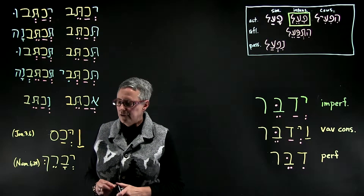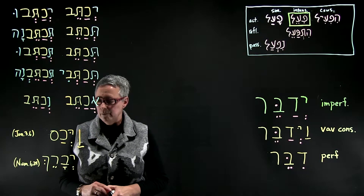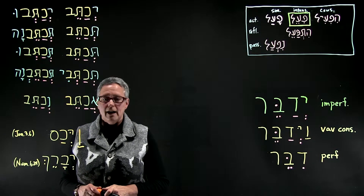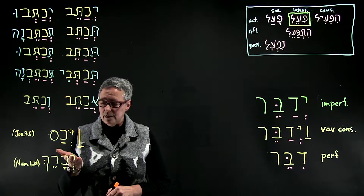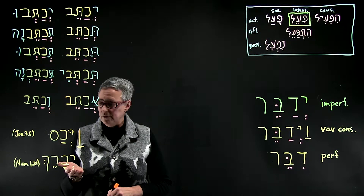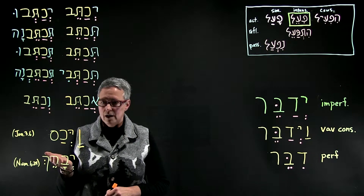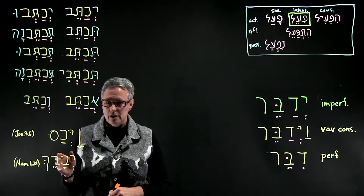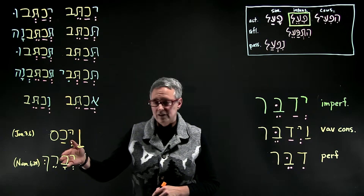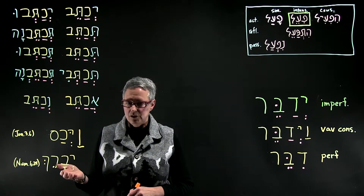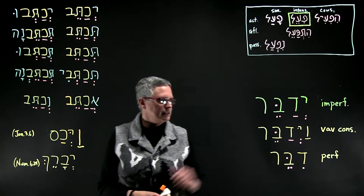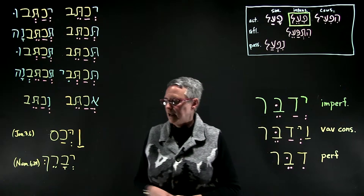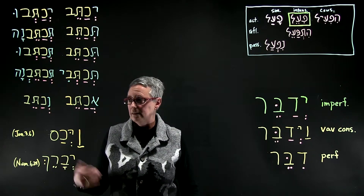Another familiar one is from Numbers: yivarech. And again, you see the shva under the prefix. Here, because the middle root letter is a guttural that can't have a dagesh, you get compensatory lengthening of the previous vowel. And instead of the patach, you now see a kometz.